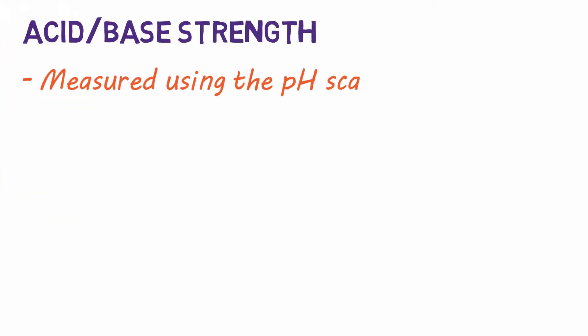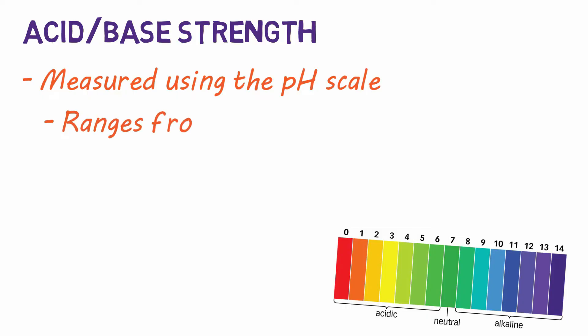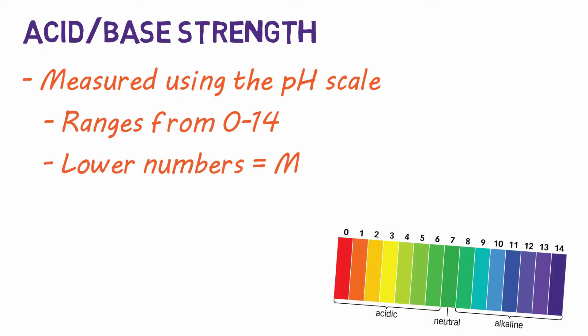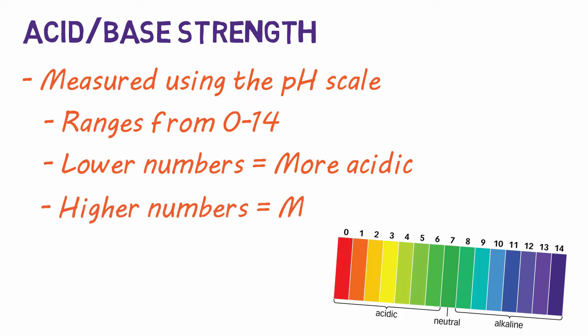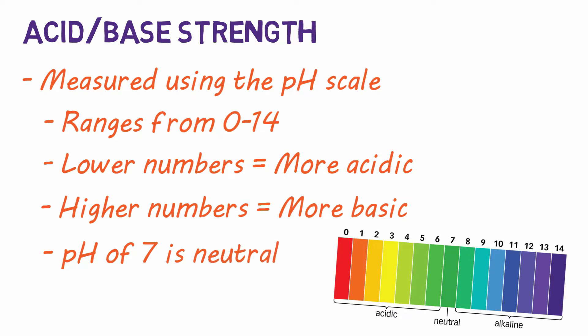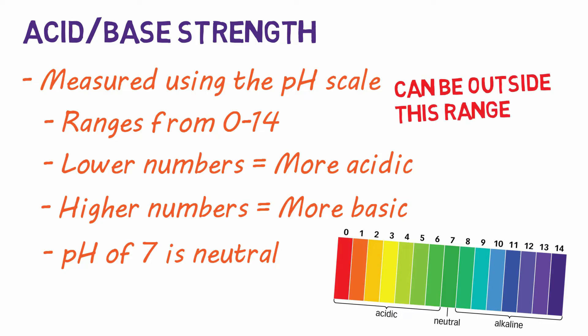The strength of an acid or base is measured using the pH scale. This scale ranges from 0 to 14. The lower the number, the more acidic the substance, and the higher the number, the less acidic or more basic and alkaline the substance. 7 is considered neutral, and pure H2O has a pH of 7. It is possible to have a pH greater than 14 or less than 0, but you won't come across those very often.